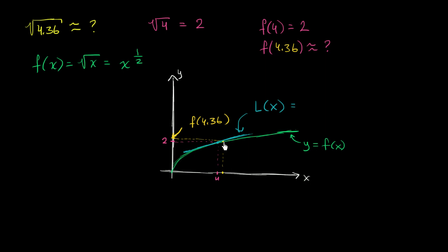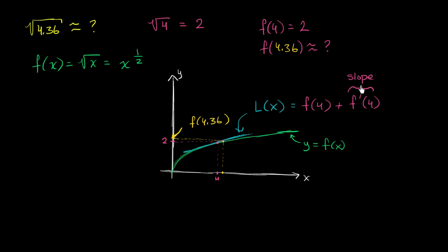One way to think about it: L(x) is going to be f(4) — which is 2 — plus the slope at x equals 4, which is of course the derivative f'(4). That's the slope of the entire tangent line L(x). And then any other point on the line is going to be f(4) plus the slope times how far you are away from x equals 4, so it's times (x minus 4).